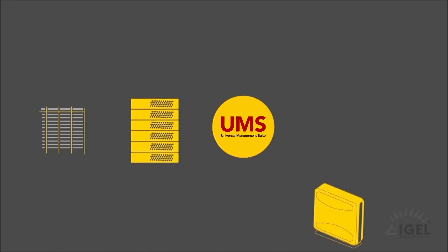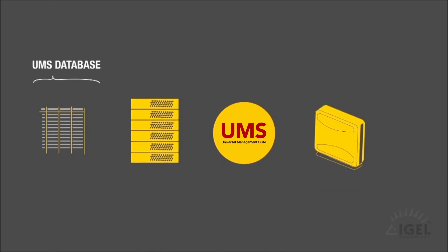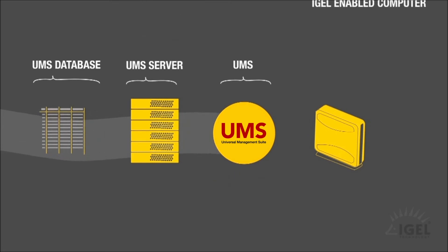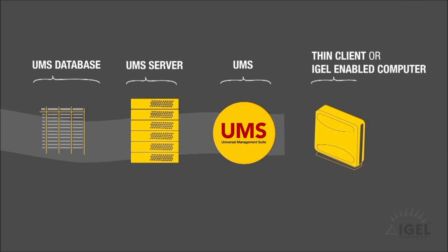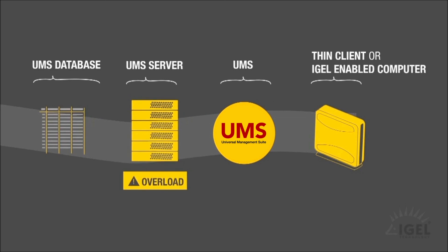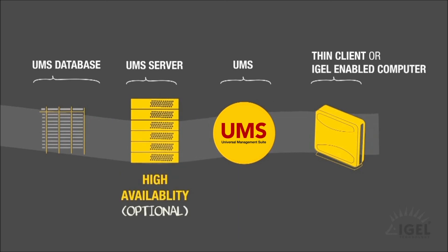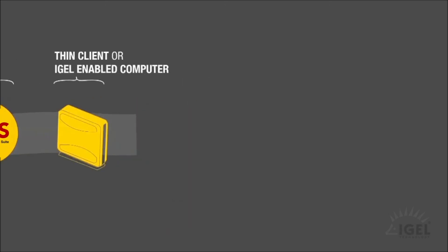Here's the explanation in four simple steps. All data and device profiles are in the database which is available to the UMS server, which is accessed by the UMS console. The UMS console is Java-based, so it can run everywhere as long as it finds a Java runtime environment. The UMS allows you to administer numerous thin clients. For bigger installations, as well as for compliance purposes, there is a high availability feature, including a load balancing mechanism to run redundant UMS servers and databases.